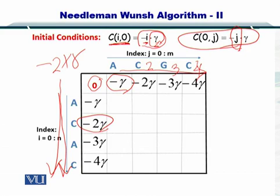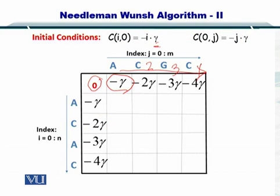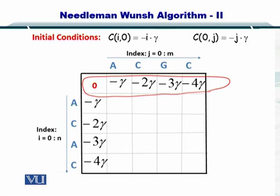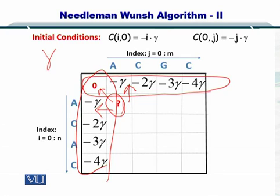So in this way you have computed the initial conditions for the entire matrix and now you have the first row which is filled, you have the first column that is filled. If you look carefully then you are in a position to compute this element because you already know the top element, the diagonal element and the left element if gamma is given to you. So in this way you can compute this element.